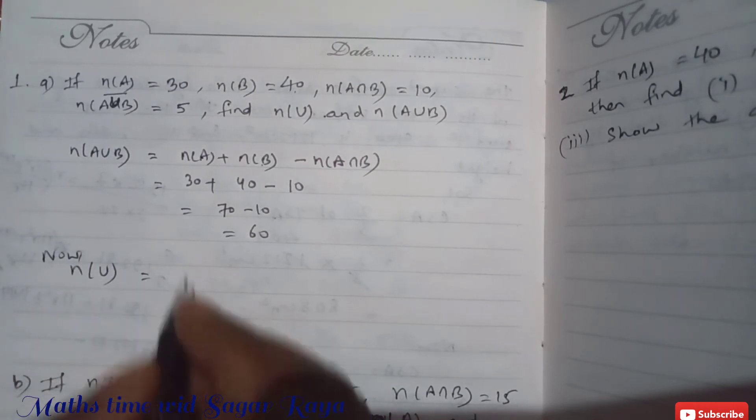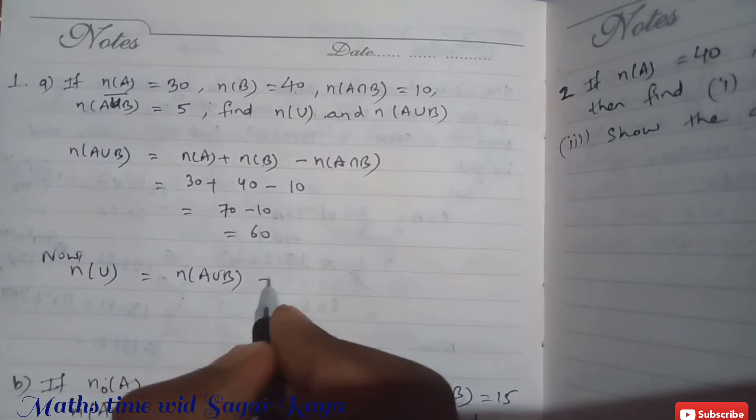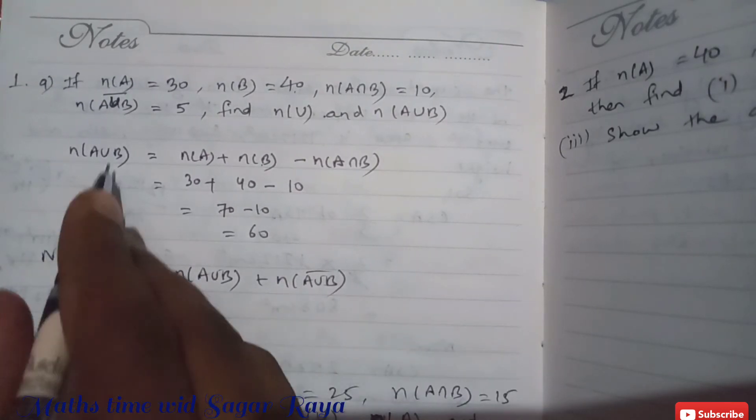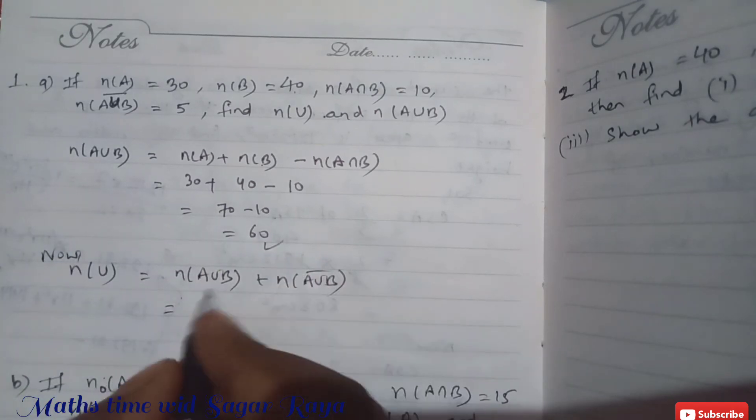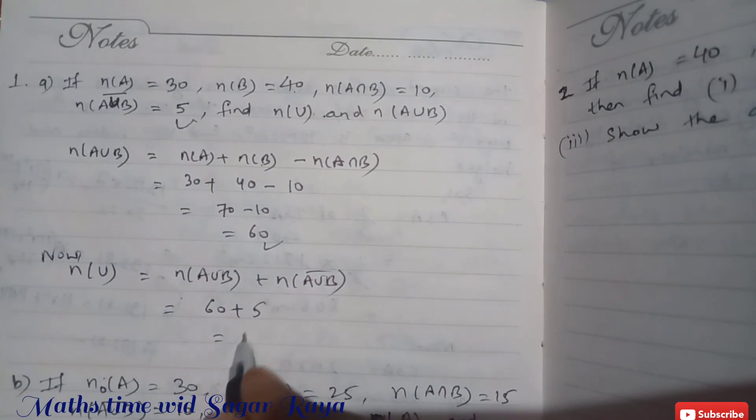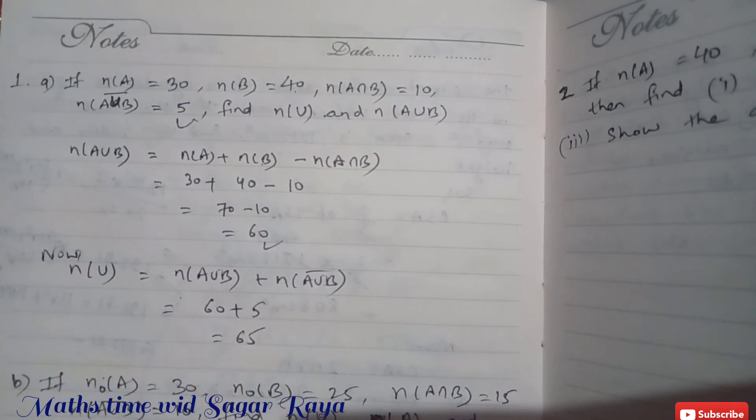Similarly, now n(U) is equal to n(A∪B) + n(A∪B)'. So n(A∪B) we calculated as 60, and n(A∪B)' is given here as 5. So the answer is 65.